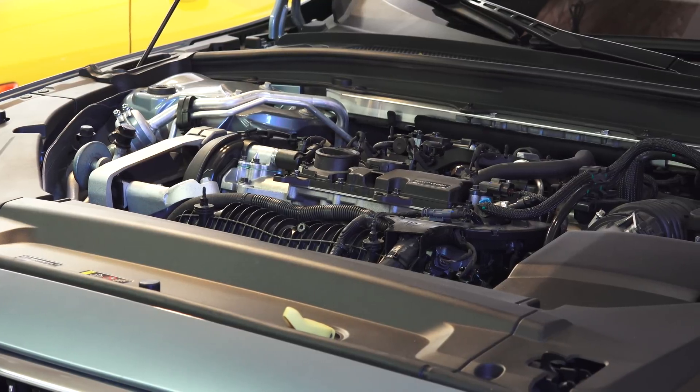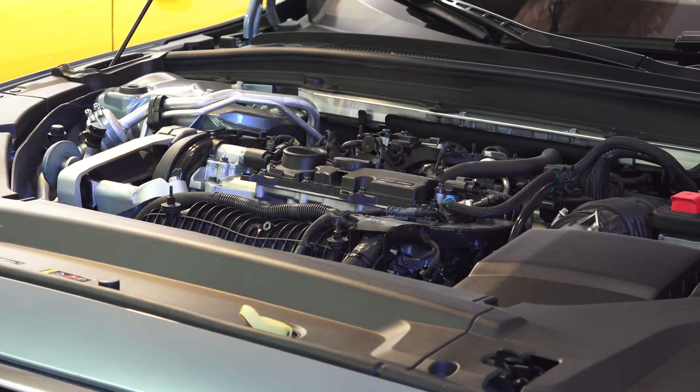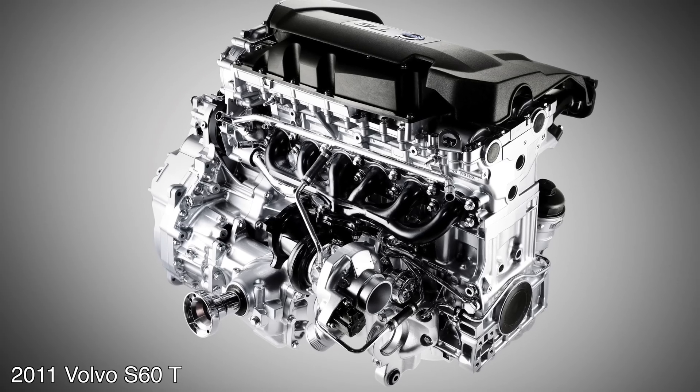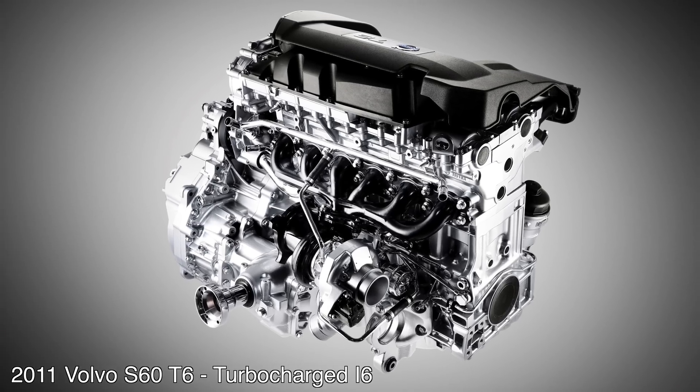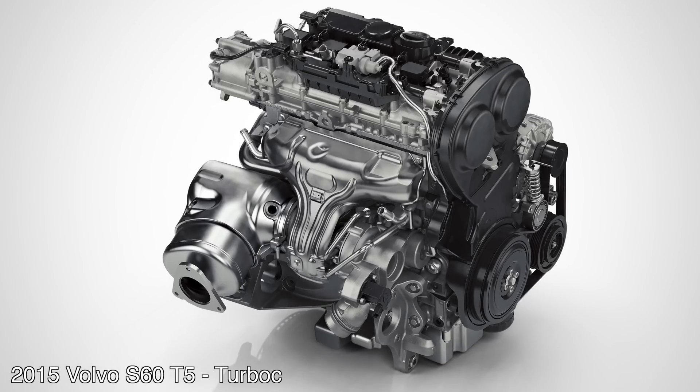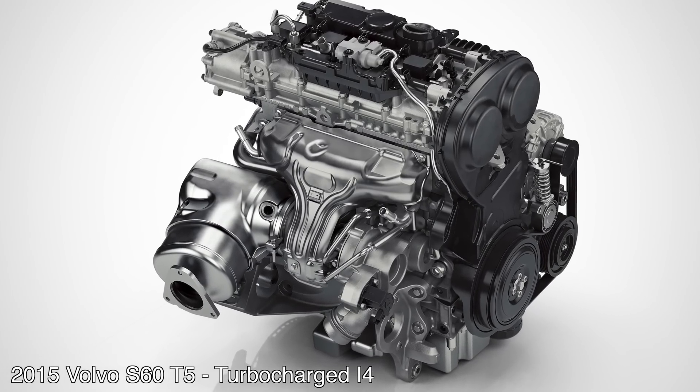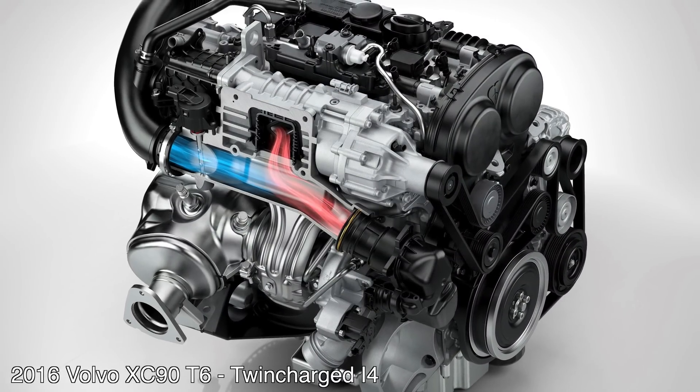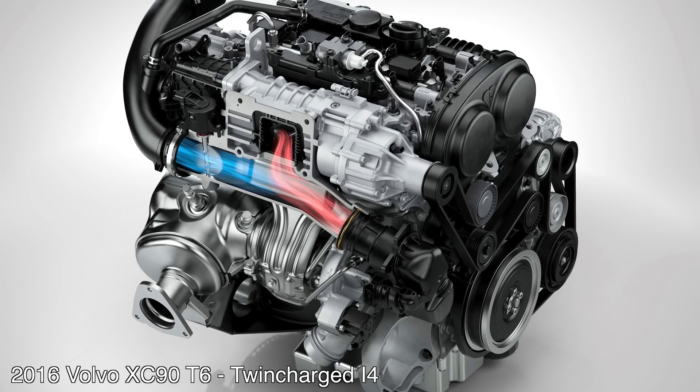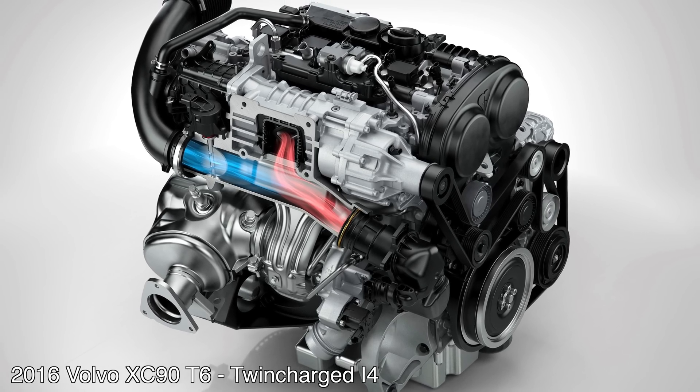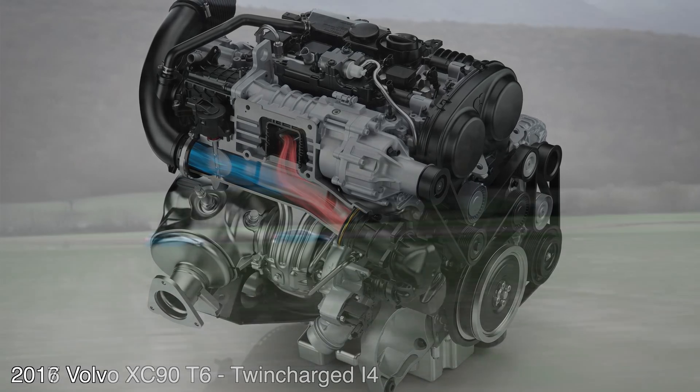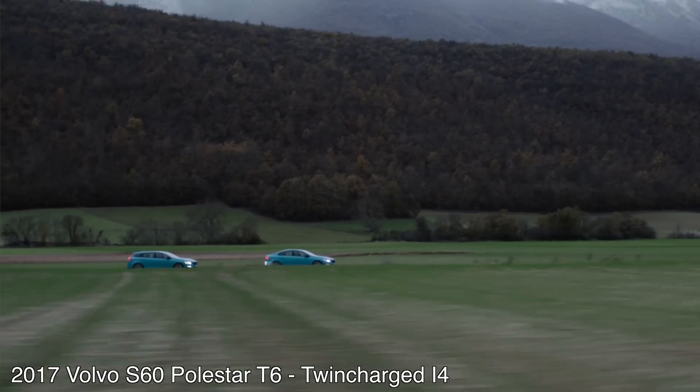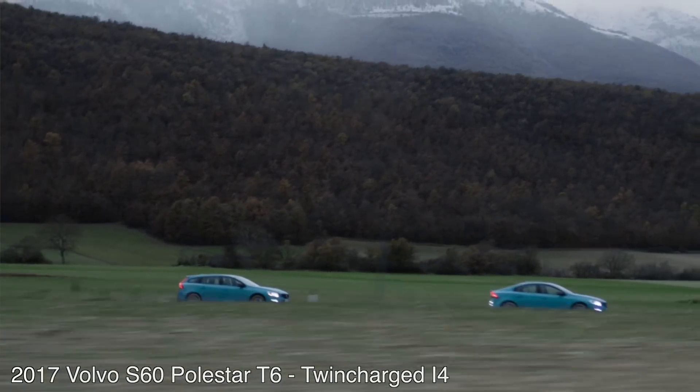Now this T6 engine has a bit of a history winning Ward's Auto 10 Best Engine Awards. In 2011 the T6 won as a straight 6-cylinder engine. In 2015 the T5 won, which is a turbocharged 4-cylinder 2.0-liter. In 2016 the T6 won, which adds on to that 2.0-liter 4-cylinder turbocharged engine, a supercharger. And then in 2017 the twin-charged 2.0-liter Volvo S60 Polestar won.